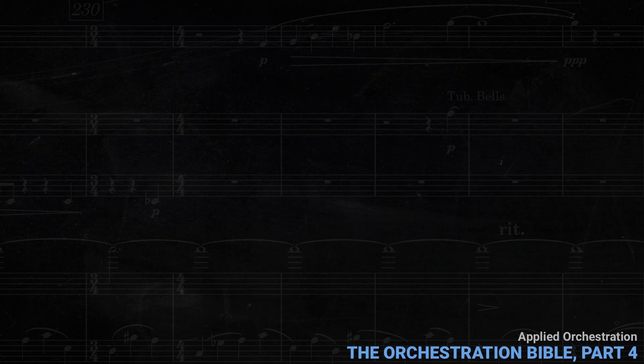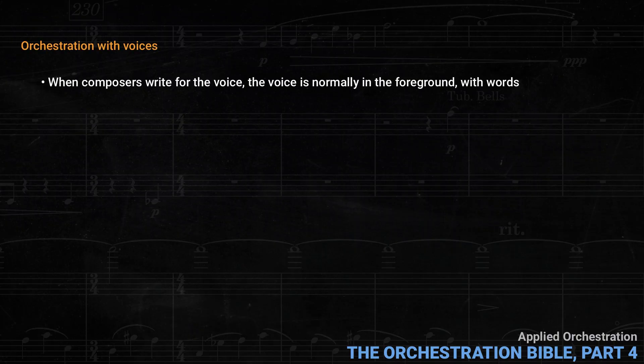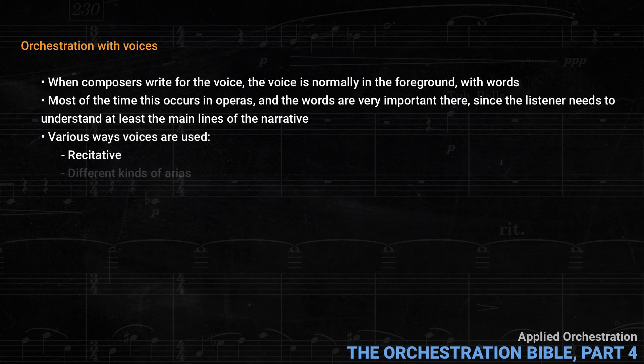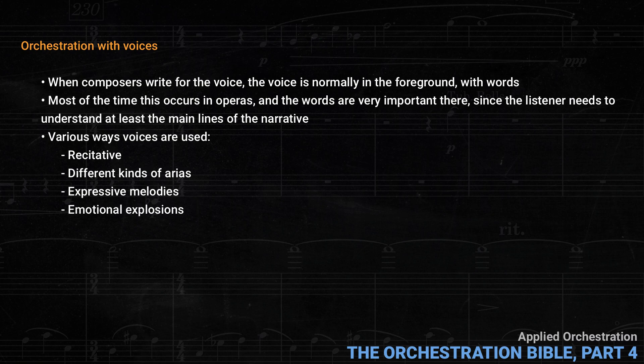First, there is a detailed discussion of orchestration with voices. This is a big subject, since when composers write for the voice, the voice is normally in the foreground with words. Most of the time this occurs in operas, and the words are very important there, since the listener needs to understand at least the main lines of the narrative. Koechlin starts by looking at the various ways voices are used: recitative, different kinds of arias, expressive melodies, and emotional explosions.